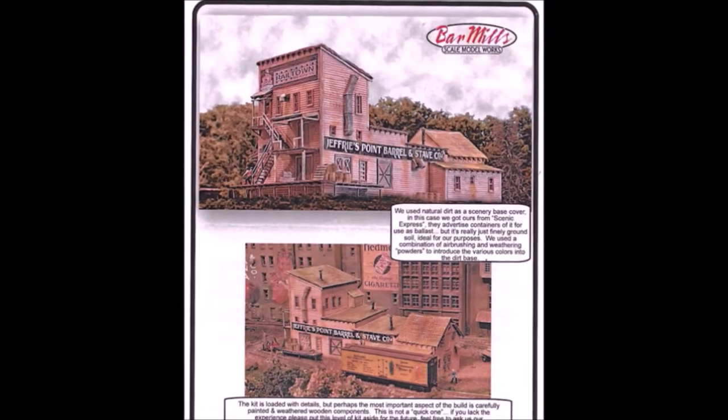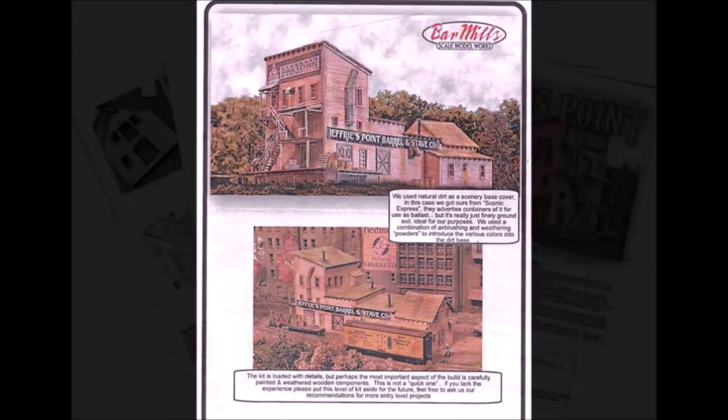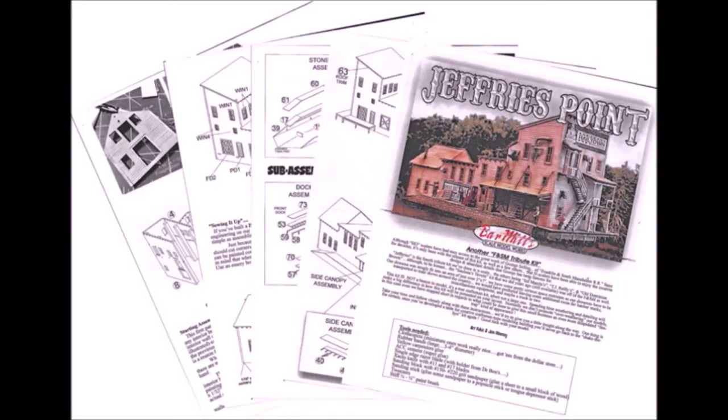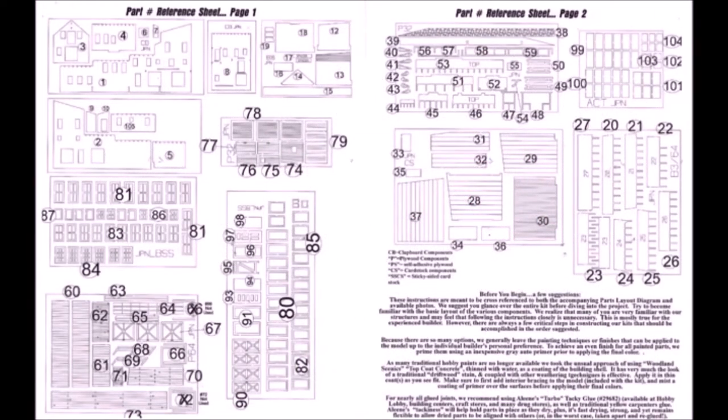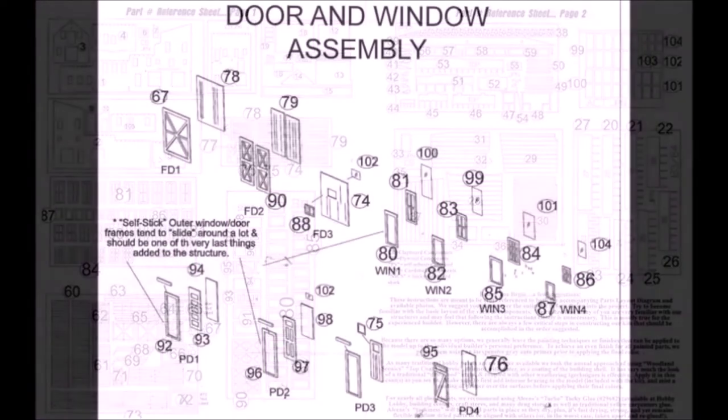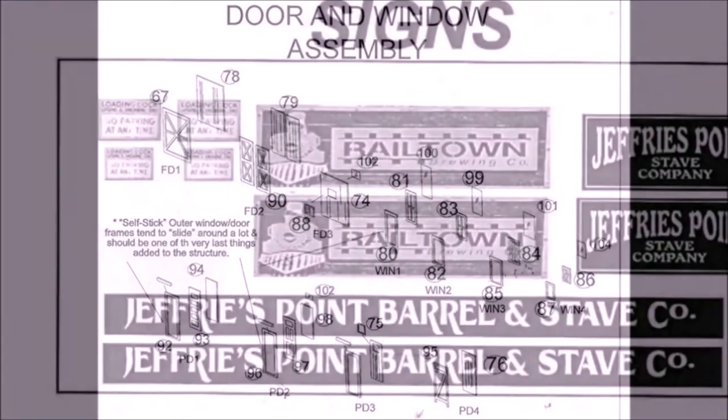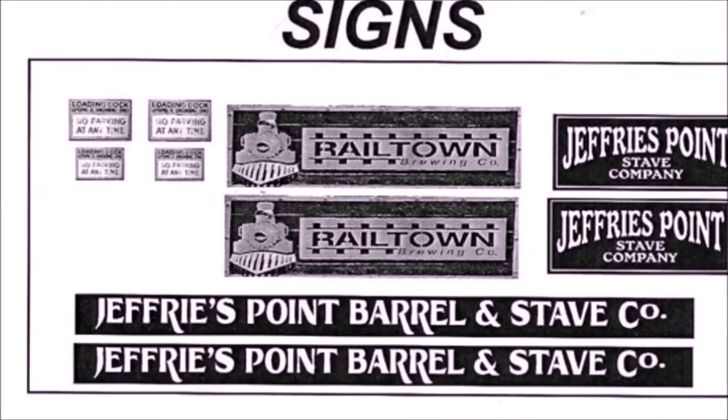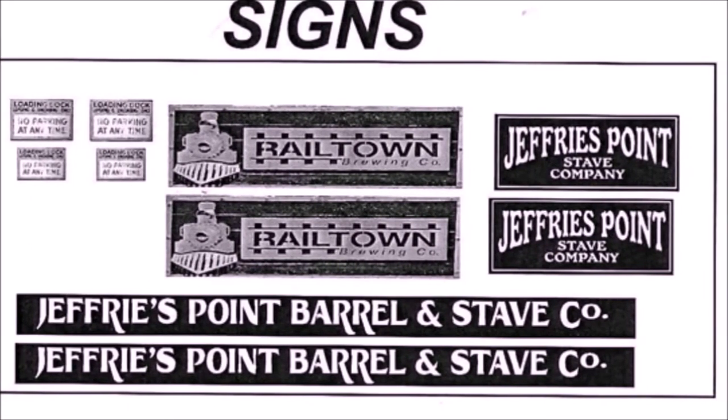This is what the structure should look like when I get done. Now these craftsman kits come with a veritable book of information on how to put them together. In fact, there's so many parts they have to give you a parts register so you can keep track of where things are. Look at the detail here, look at all the different pieces that go together to make the doors and the windows.